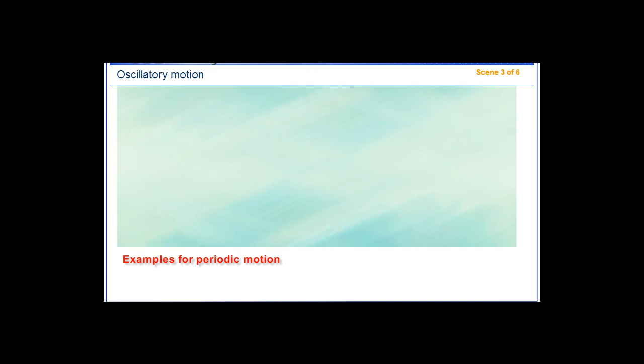Examples of periodic motion: A. Oscillatory motion. B. Wave motion.